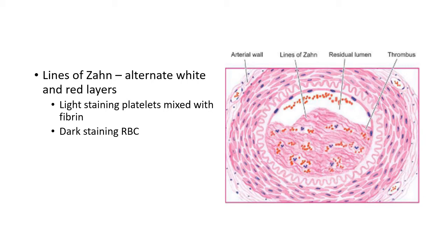Generally, red thrombi are soft and gelatinous, and white thrombi are firm and pale. Coming to microscopic features, the lines of Zahn can be appreciated microscopically. These alternate white and red layers are formed by light-staining aggregated platelets admixed with a fibrin meshwork, and a dark-staining layer of red cells. The light-staining white layer is formed by aggregated platelets and fibrin meshwork, whereas the dark-staining red layer is formed by red cells, giving the appearance of alternating lines called the lines of Zahn — the unique feature of thrombi.